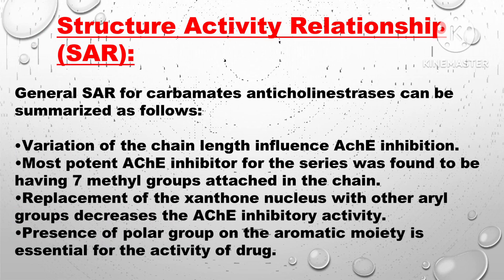Structure-Activity Relationship: The general SAR of carbamate anticholinesterase can be summarized as follows. Variation of chain length influences acetylcholinesterase inhibition. The most potent anticholinesterase inhibitor in the series was found to have 7 methyl groups attached in the chain. Replacement of the indane nucleus with other aryl groups decreases the acetylcholinesterase inhibitory activity.